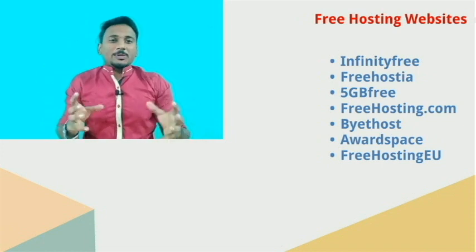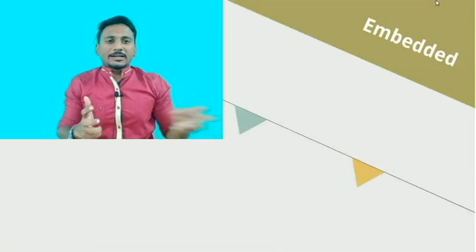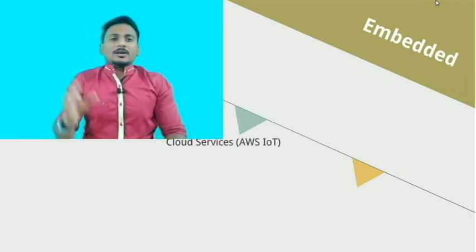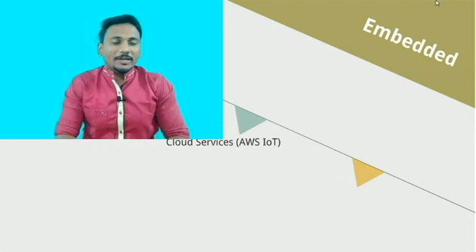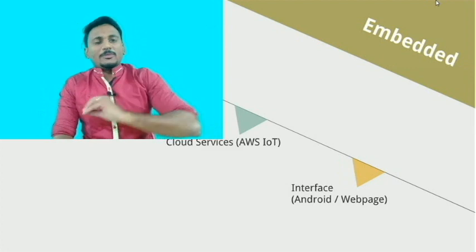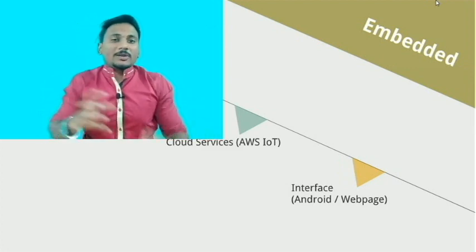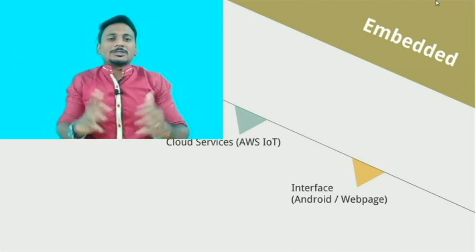Or you can move towards embedded systems — take Arduino or Raspberry Pi and connect with a temperature sensor to predict and monitor the temperature in your room. You can also connect one website and an Arduino with the help of AWS IoT. If you connect all those things, you can monitor and operate them from anywhere — that's the real-time concept of IoT.